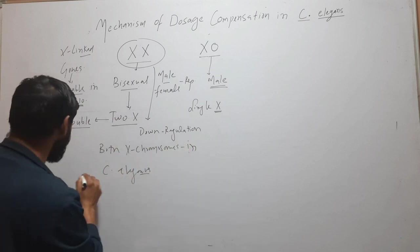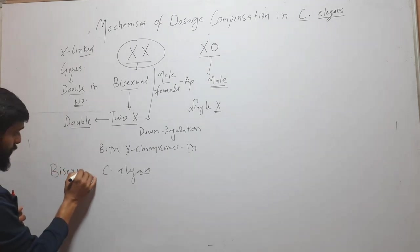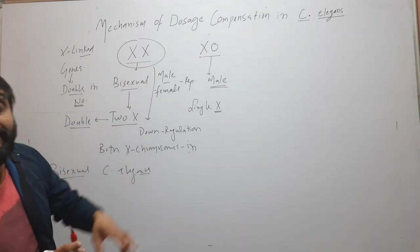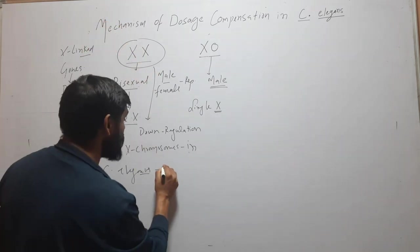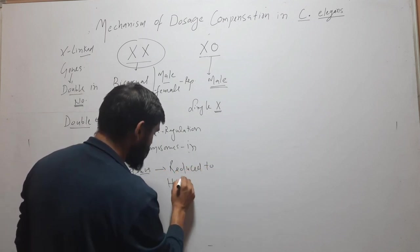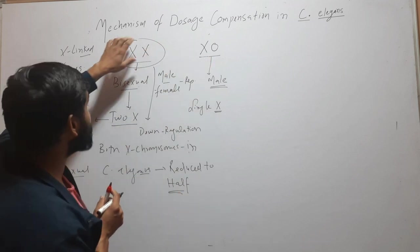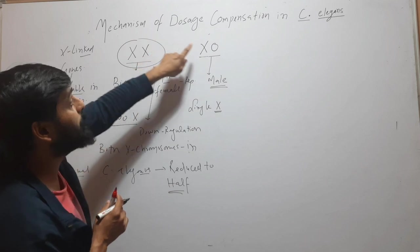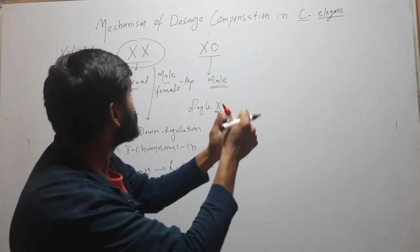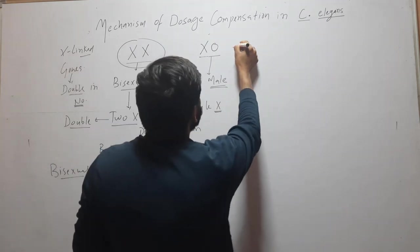In the bisexual C. elegans, the activity of both X chromosomes is reduced to half. So if activity is reduced to half, then half plus half equals one, meaning the dose of X-linked genes becomes equal between bisexual and male. This is accomplished by a protein complex.